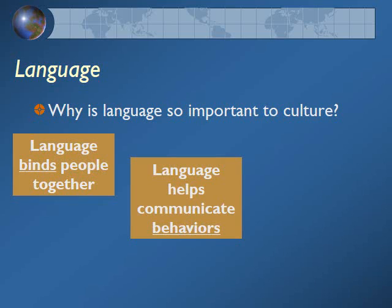Language also helps communicate behaviors, and this happens very early on. Think about when you're a child and your parent does something and you mimic it — they often will explain why they did that. Or if you practice a behavior that your culture doesn't connect with or doesn't seem appropriate, they use language to communicate that it's not acceptable, and that continues throughout life.